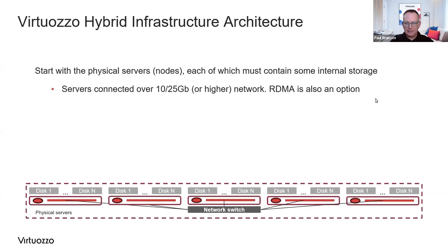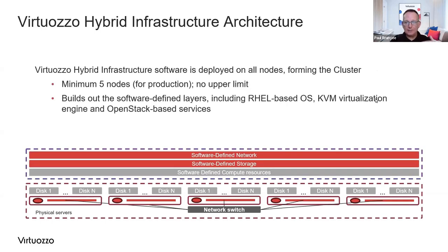We take these nodes and layer software on them. The Virtuoso Hybrid Infrastructure software is deployed on all nodes, and in doing so we form a cluster. We say the minimum really needs to be five nodes for production operation. There's no upper limit - you can scale a cluster to however many nodes you wish. The reason we say five nodes is because we deploy a number of services in a redundant HA fashion across all servers within a deployment, delivering full HA. Our software can be installed on a single server, but there's no resilience in that, so we don't support that for production.